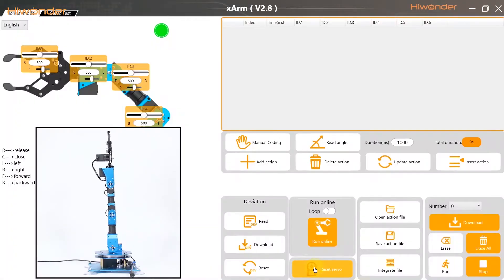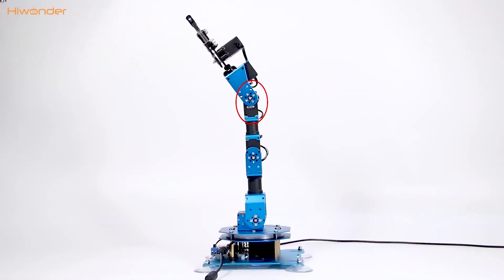Turn on the switch, open the PC software and click the reset servo to check the position of the robotic arm.